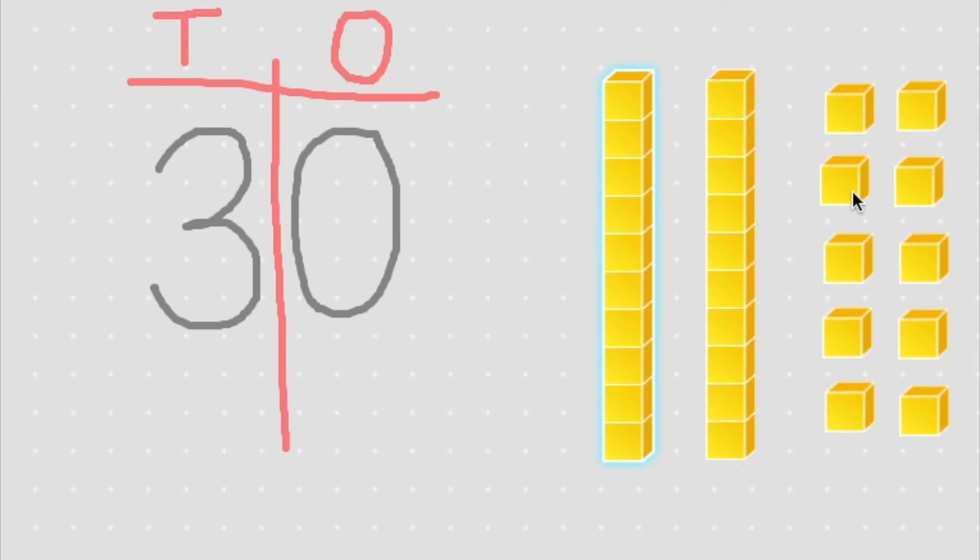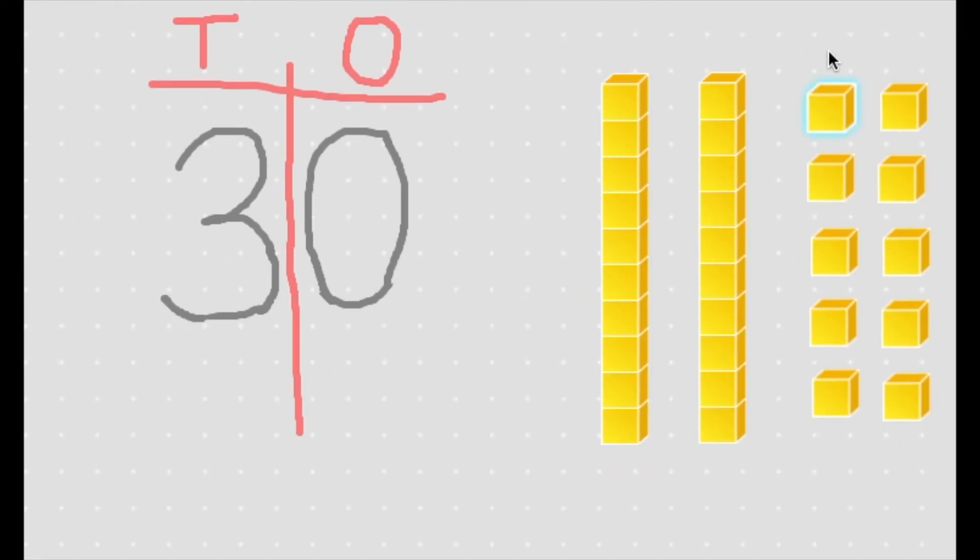So when we have 10 cubes, we can exchange them for one long. An exchange means we get rid of all of our 10 cubes and take a long instead. Now we have three longs. Our number is still 30 because we have a three in the tens place. We have three tens and we just exchanged our cubes. So we have zero cubes left and a zero in the ones place.